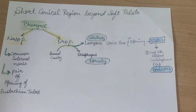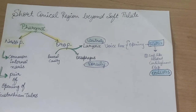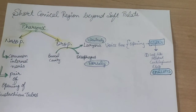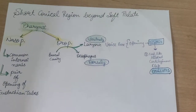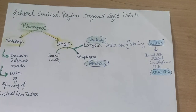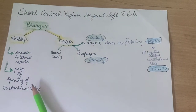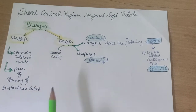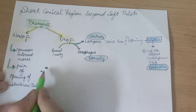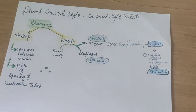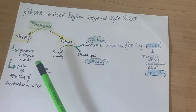The next region is the pharynx. The pharynx is a short conical region present beyond the soft palate. It is divided into two parts: the upper region is the nasopharynx, and within it is the oropharynx. The nasopharynx has one common opening of the internal nares, plus a pair of openings of the eustachian tube — so one nasal opening and two eustachian tube openings are present in it.